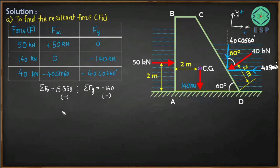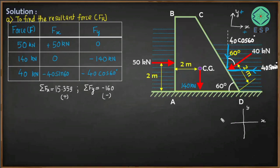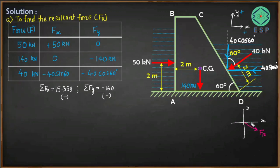Since ΣFx is positive and ΣFy is negative, the resultant force lies in the fourth quadrant — pointing rightward and downward. The resultant force FR = √(ΣFx² + ΣFy²) = √(15.359² + 160²) = 160.735 kN.